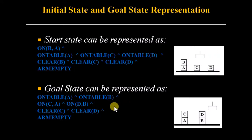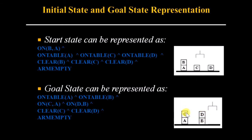Similarly, the goal state is: On-table(A), On-table(B) — block A and block B are on the table; C is above A and D is above B, so On(C,A) and On(D,B); Clear(C) — nothing is above block C; Clear(D) — nothing is above block D; and Arm-empty — the robot arm is empty.